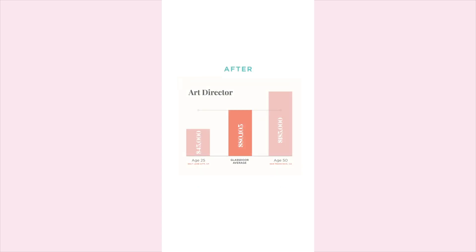Now check out this after. Betsy condensed the information down to the Glassdoor average salary for an art director. Now we have a reference point, and we see where both our lowest and highest salary submissions fall on the spectrum. By making the average a bolder color, it's easier to tell that it serves as a reference for comparison. Plus, the line highlights the discrepancy and surplus of submitted data.